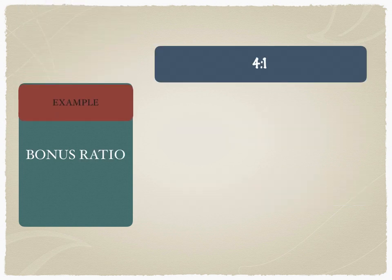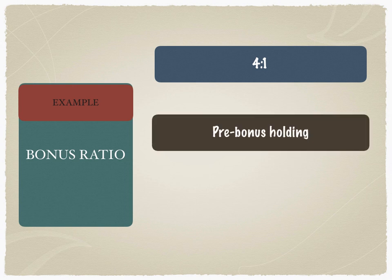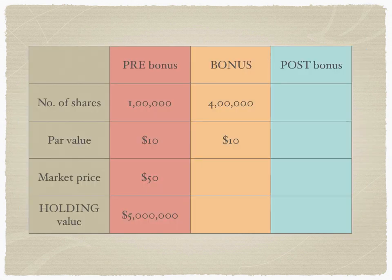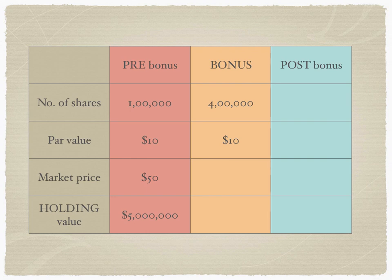That means if Hurry Hedge Fund owns one share, they will get four additional shares. In a bonus, the ratio works like this: the pre-bonus holding is one, they get a bonus of four, and the post-bonus holding therefore becomes five. Going back to the table — the number of shares is a hundred thousand, the par value is ten dollars, the market price is fifty dollars, and the holding value is five million dollars. The number of bonus shares issued is four hundred thousand, and the par value is not changed. Post-bonus, the number of shares is a hundred thousand plus four hundred thousand — giving us five hundred thousand.